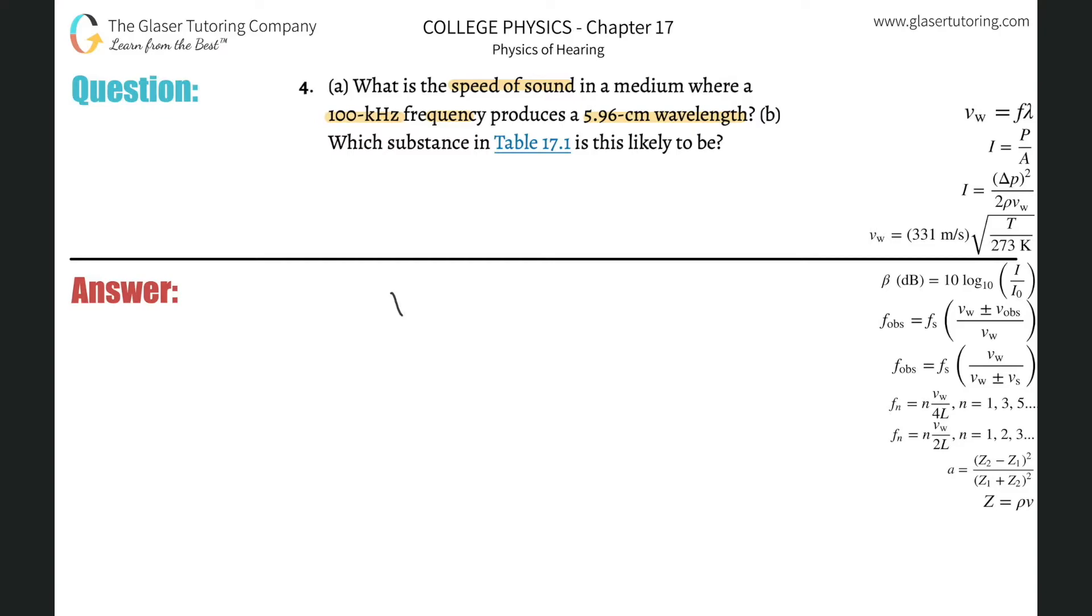We have a nice little formula, right? The velocity of a wave - and sound travels as a wave, so this is appropriate to use - the velocity of a wave is equal to the frequency of that wave multiplied by the wavelength of that wave.